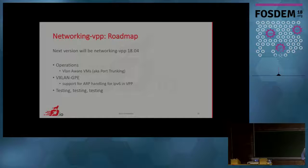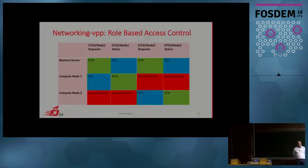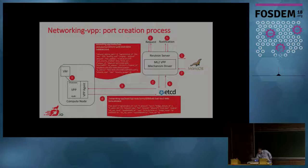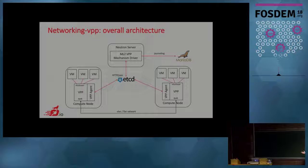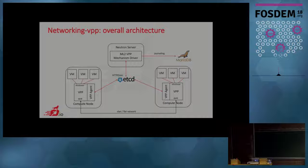Question: does the VPP agent replace the Neutron agent on the compute nodes? The answer is: there isn't one single neutron agent — the agent on the compute node depends on the virtual switch you use. If you're using OVS you get an OVS neutron agent; if you're using Linux bridge, you use another agent. We have written an agent that runs on the compute node and drives VPP. So yes, it replaces the other agents, because this agent knows how to talk to VPP and how to talk to etcd.